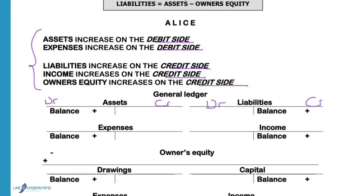The left-hand side of the account is the debit side and the right-hand side is the credit side. If we look in the general journal, we will see that assets and expenses always have debit balances and they increase on the debit side. To remember which accounts increase on the debit and credit side, we will use ALICE.